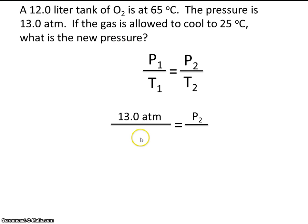Now we plug in the temperatures, keeping in mind that temperature must be in Kelvin. It starts at 65 degrees C. Using the formula, temperature in Kelvin equals temperature in Celsius plus 273. So 65 plus 273 gives us 338 K for T1.